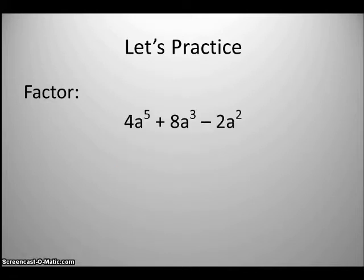Now let's look at this one. This one looks a little confusing, but it's not so bad. We're just going to take it step by step. I have 4a to the 5th plus 8a cubed minus 2a squared. The first thing I'm going to do is look at my numbers. I have 4, 8, and 2. What's the largest number, if any, that's in common with each term? 2.